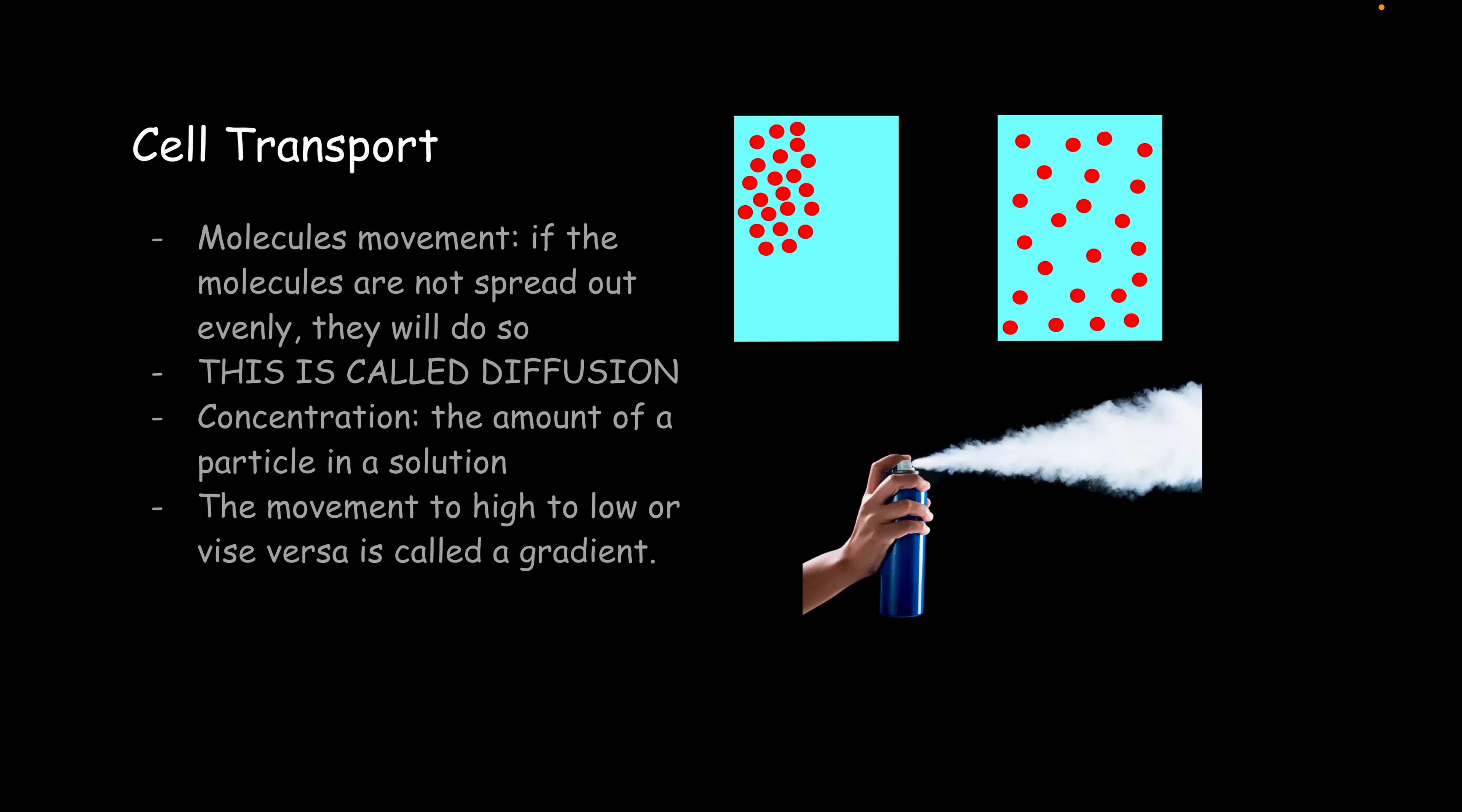So, we have cell transport next. If molecules are not evenly spread out, they will do so. That's called diffusion. Concentration refers to the amount of a particle in a solution. If you have a high concentration, you have a lot of particles. If you have a low concentration, you have a low amount of particles.